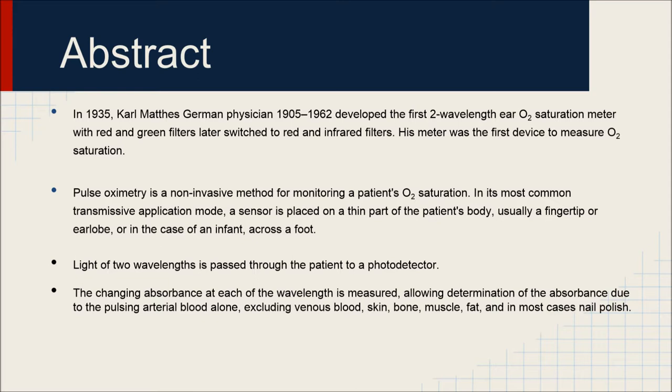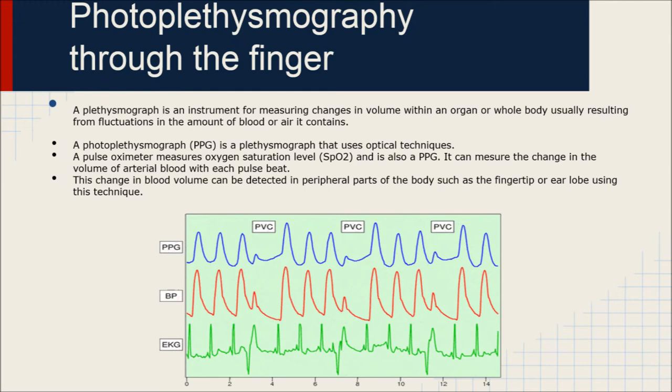Light of two wavelengths is passed through the patient to a photodetector. The changing absorbance at each of the wavelengths is measured, allowing determination of the absorbance due to the pulsing arterial blood alone, excluding venous blood, skin, bone, muscle, fat, and in most cases, nail polish.